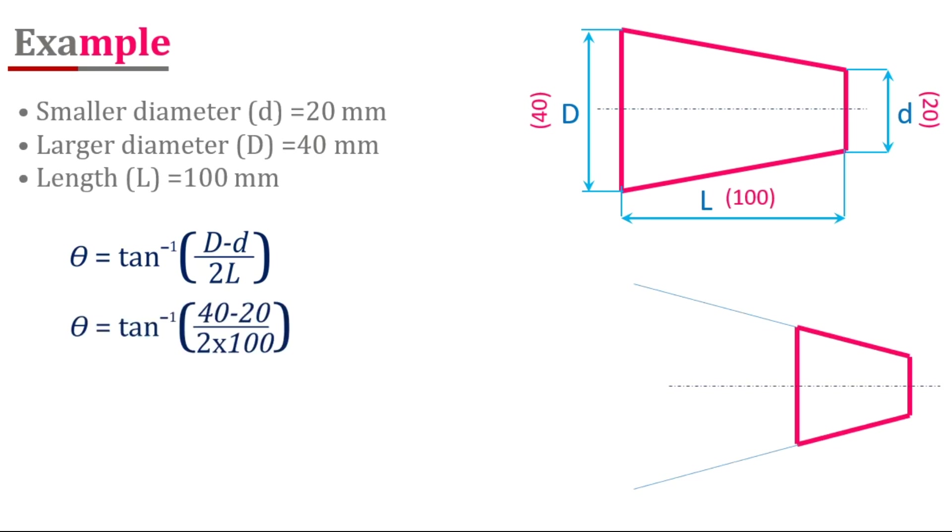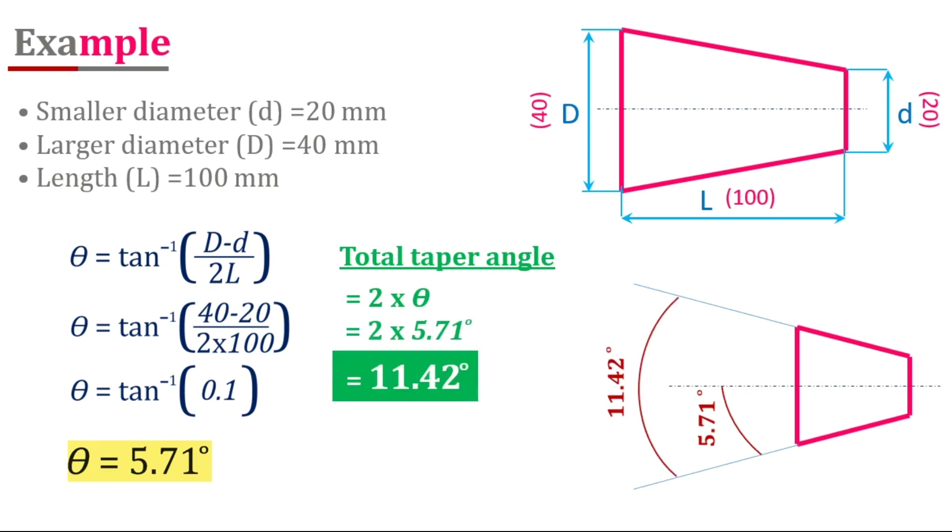After substituting the values into the formula, we get the value of θ, which is 5.71 degrees. By multiplying θ by 2, we get the total included angle, which is 11.42 degrees.